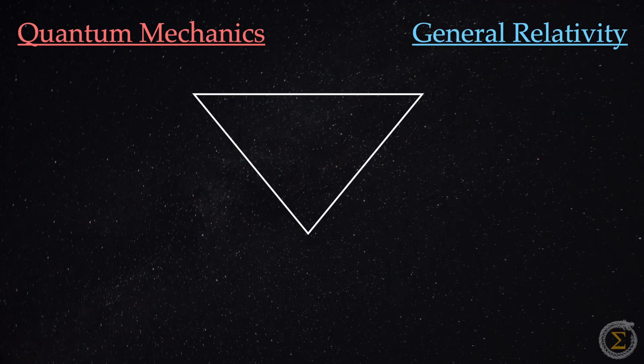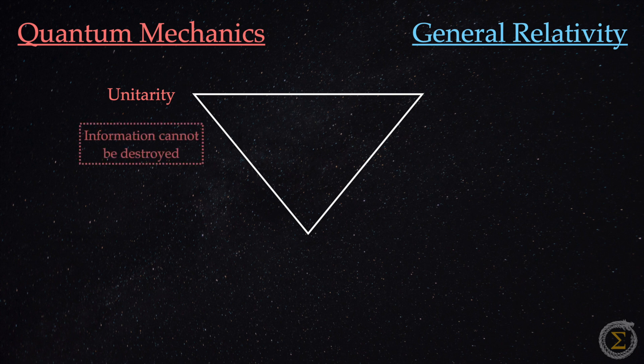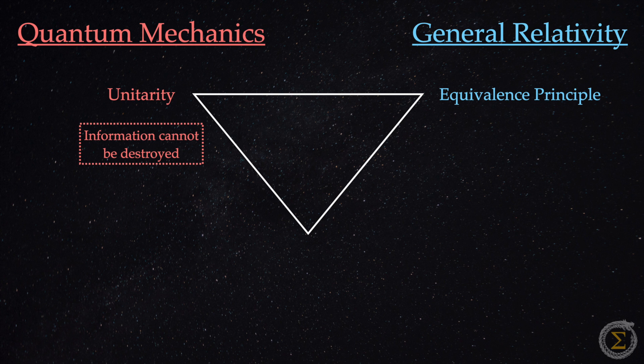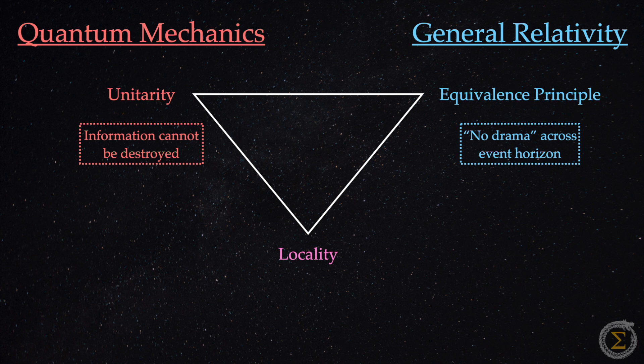Let's review real quick. Quantum mechanics unitarity demands that information about anything falling into a black hole must be preserved. GR's equivalence principle suggests a totally smooth fall into a black hole. And locality maintains that, since nothing travels faster than light, the inside and the outside of a black hole can't affect each other instantly. One of these three cherished principles—unitarity, equivalence, or locality—needs to be sacrificed.